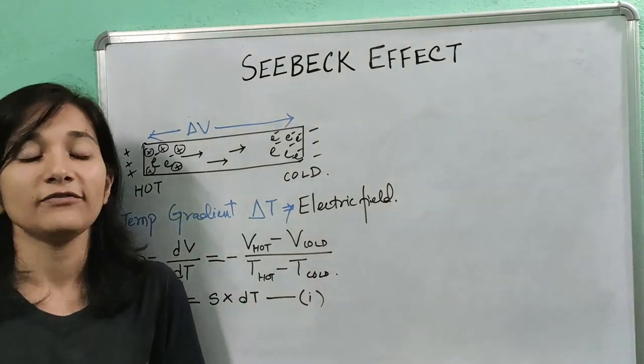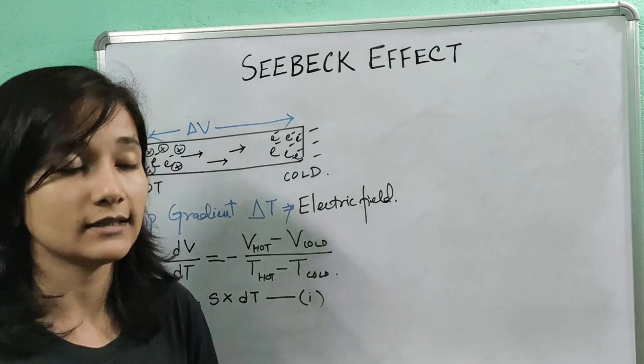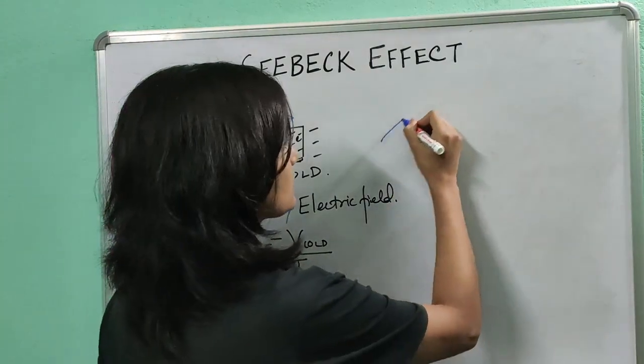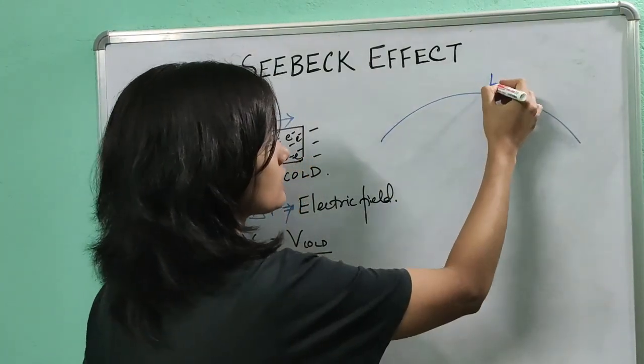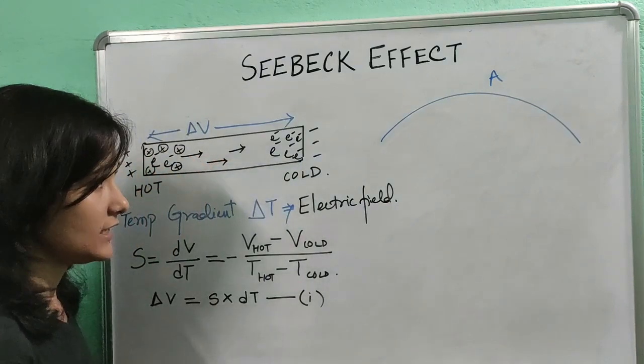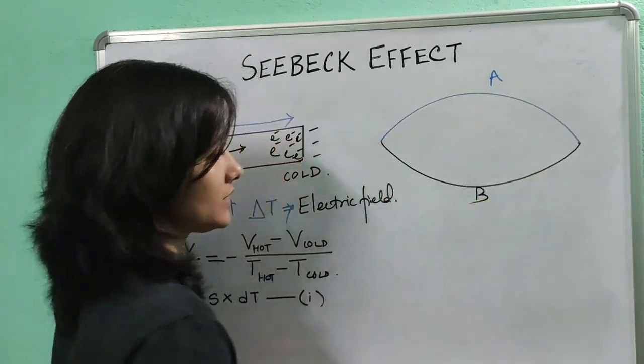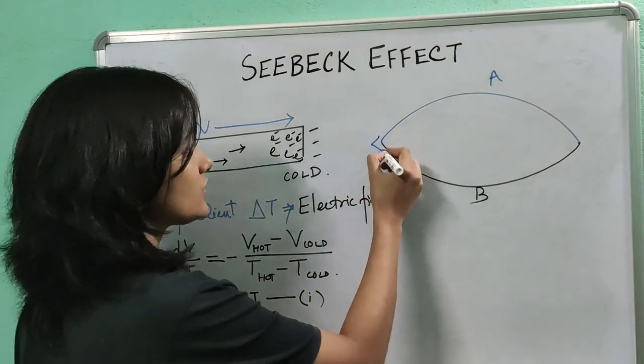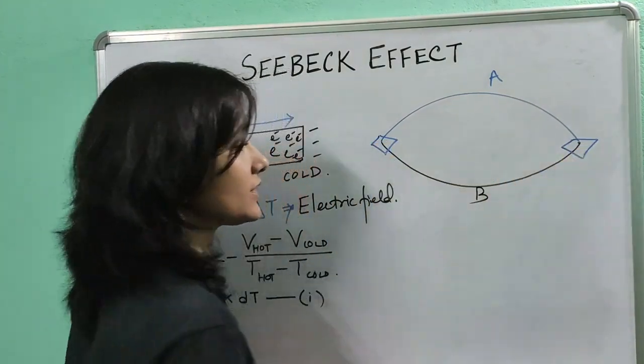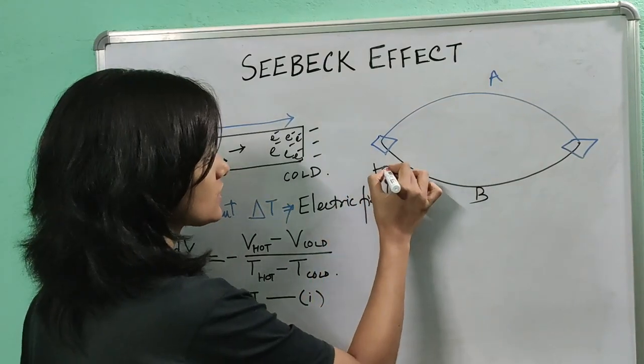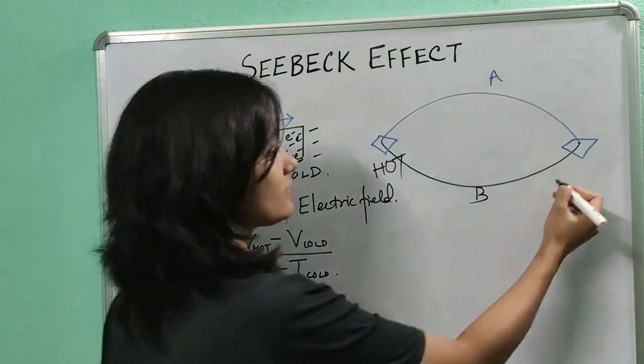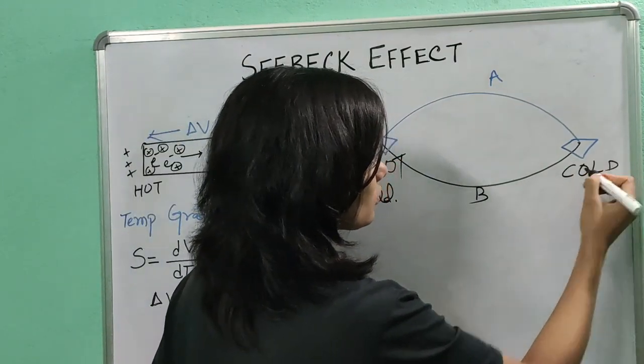Now if I take two different wires, suppose this is a wire made of metal A and this is another wire made of metal B, and I maintain the two junctions at different temperatures. Suppose this junction is made hot and this junction is made cold.